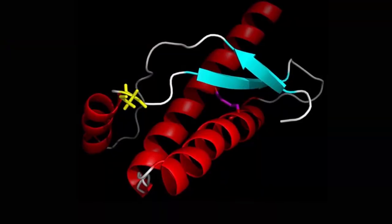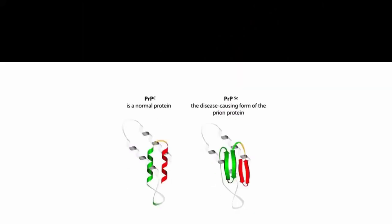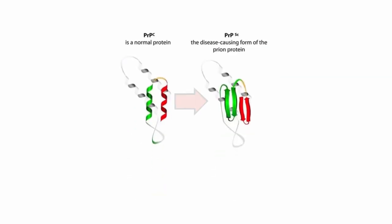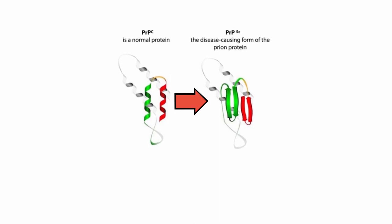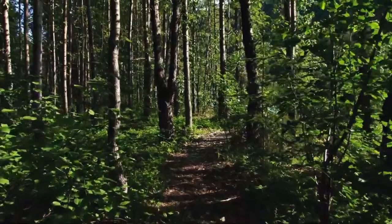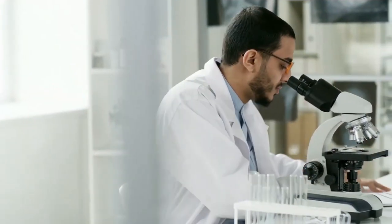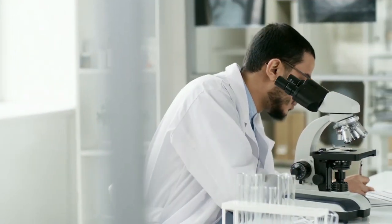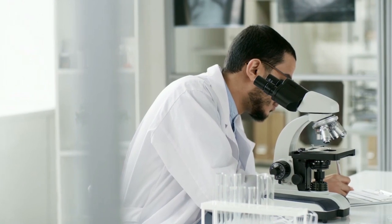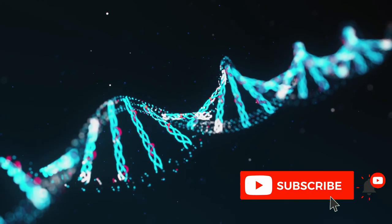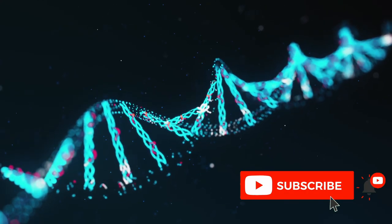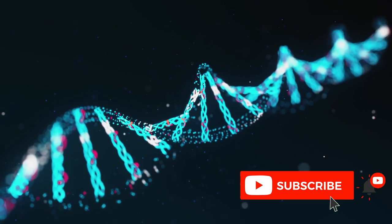Prion diseases are therefore a unique concern, as they are caused by a currently unstoppable misfolded protein that converts healthy protein into disease protein. They build up in the environment and occur sporadically in otherwise healthy people. We are fortunate that symptomatic disease is currently rare, and research may lead to treatments in the future, as well as pay dividends for other diseases involving misfolded proteins, such as Alzheimer's. If you're interested in learning more about biology and medicine, subscribe to my channel, Life Science Stories.